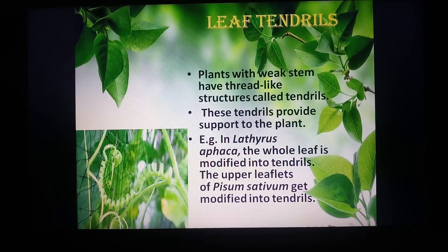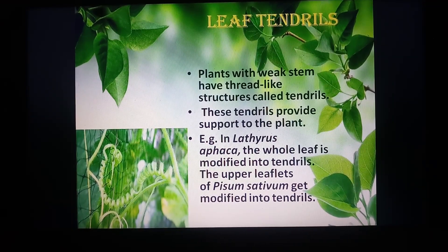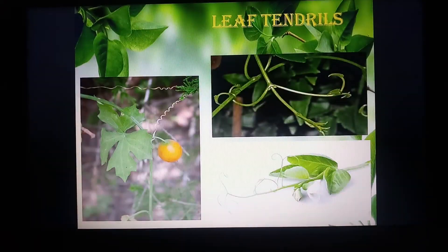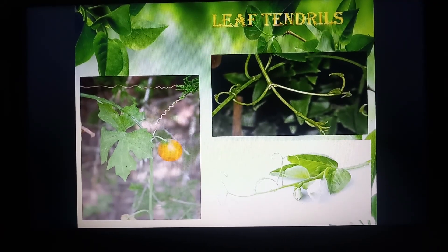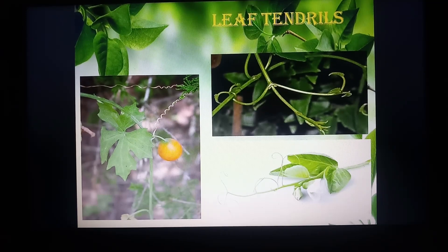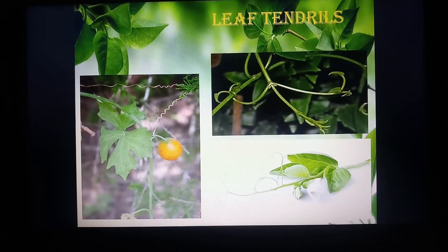If you see a pea plant, it has tendrils with which it tends to hold onto a support and grow easily. Other examples of leaf tendrils can be seen where the tendril holds onto another stem. Additional examples are bitter gourd and watermelon.